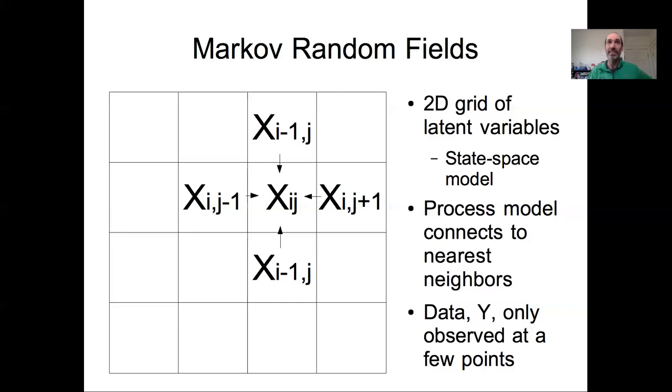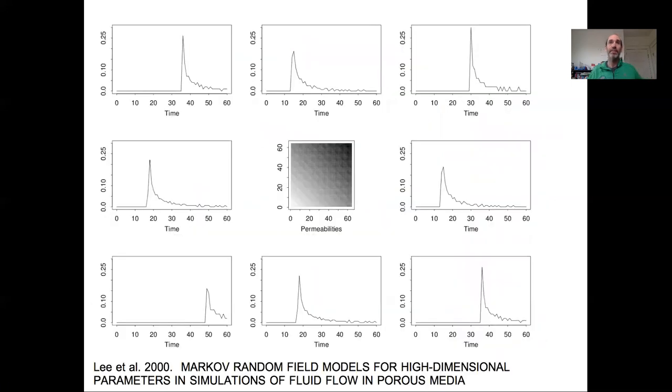That said, they can be easier to implement than spatial covariance models, and they definitely avoid the challenge of having to write down and invert that large spatial covariance model matrix. So I'm not actually going to show the implementation of a Markov random field model. I'm just going to walk through a couple examples. And specifically, I'm going to draw on examples from this older paper by Herbie Lee.